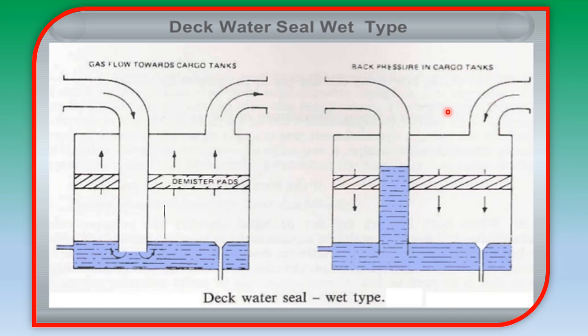When back pressure is created in the cargo tank, it pressurizes the water content. Since the outlet pipe is not submerged, the complete pressure acts on the water surface, causing the water to rise into the IG inlet pipe — creating a seal. This does not allow gas to return to the engine room side. So this deck water seal handles both conditions: normal gas flow toward the cargo tank and the back pressure condition.